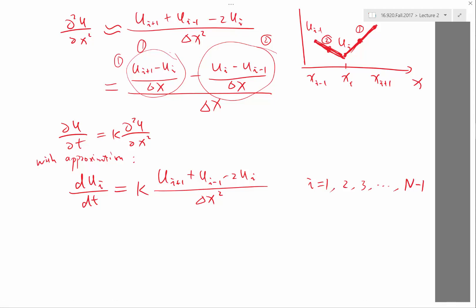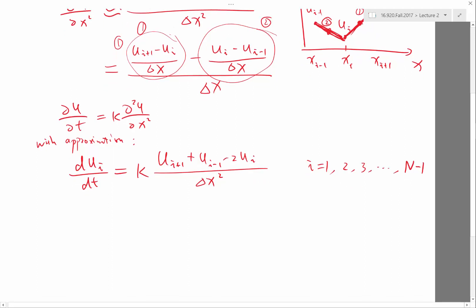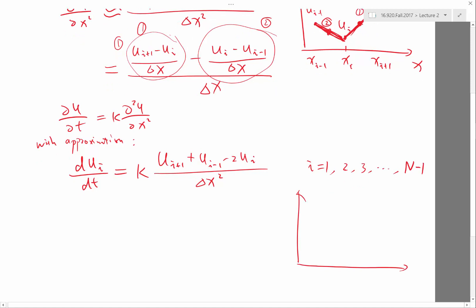For these N-1 ODEs, remember our grid starts with x_0 and goes all the way to x_N. These N-1 ODEs use the values of u_1, u_2 to u_N-1, but also u_0 and u_N. These are given by boundary conditions.